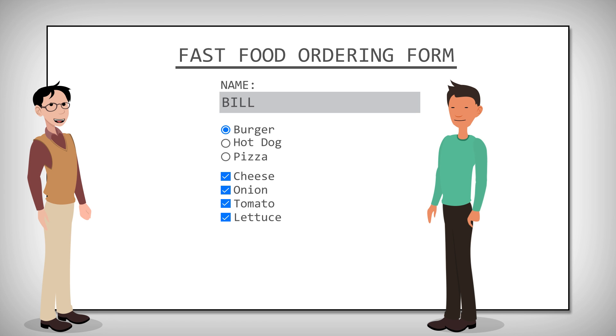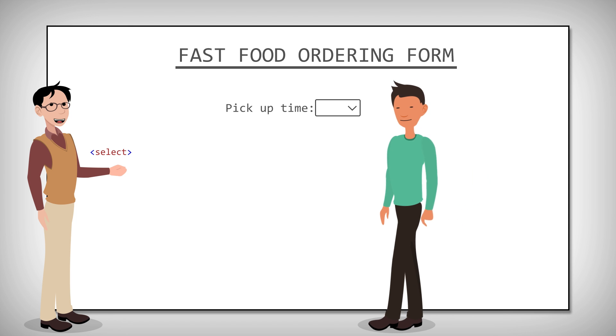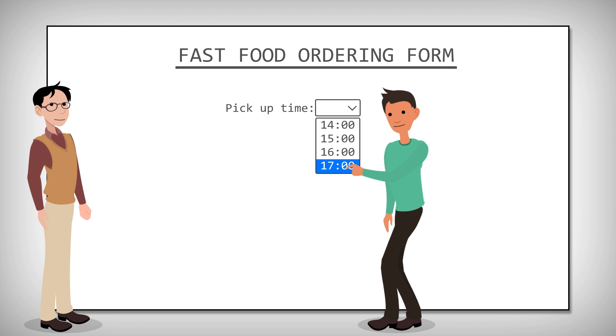In addition to the input element, there are several other elements we can use in forms. The select element defines a drop-down list. It's a partially hidden list that drops down with a list of options that you can choose from. I'll pick this up at 5 o'clock.